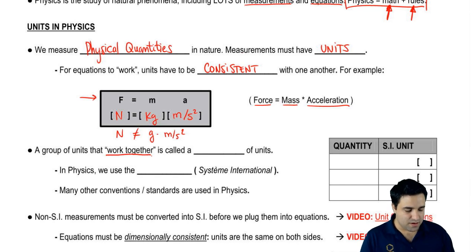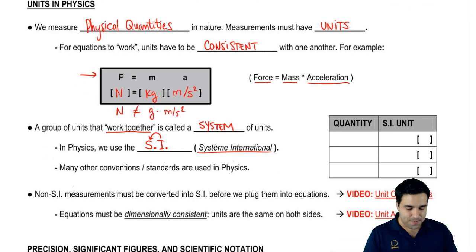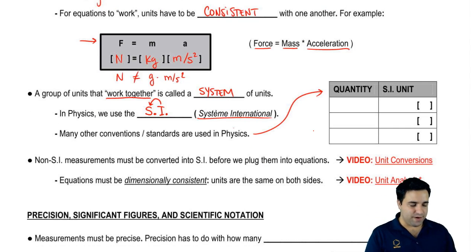A group of units that work together form what's called a system of units. There's lots of systems of units. In physics, we use the international system. Now it's abbreviated SI instead of IS, international system. It's kind of backwards because it's in French. And I'm not going to try to pronounce that. So many other conventions and standards are used in physics. We'll talk about those as we go. Let's look into the SI unit for now.